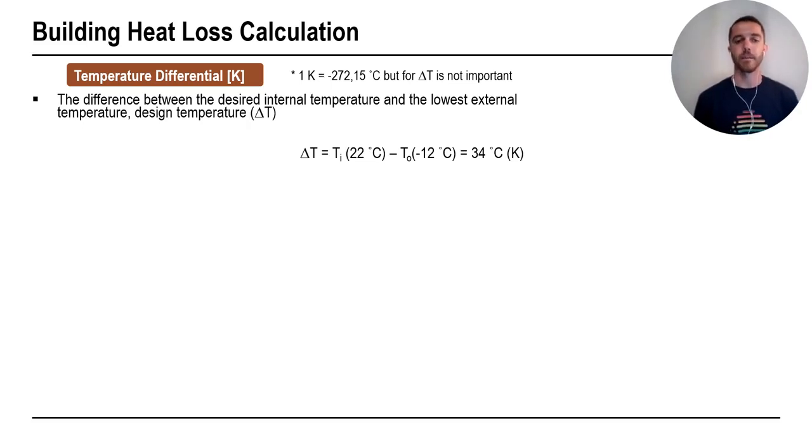So in this example, if we want inside temperature of 22 degrees Celsius, design outdoor temperature is minus 12 degrees Celsius. This temperature differential is 34 degrees Celsius, or degrees Kelvin. You need to take care of when you are dealing with Kelvin, as one Kelvin is minus 272.15 degrees Celsius, but here we are dealing with temperature difference. So temperature difference is the same in Kelvin and Celsius.